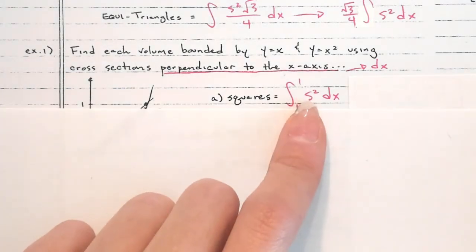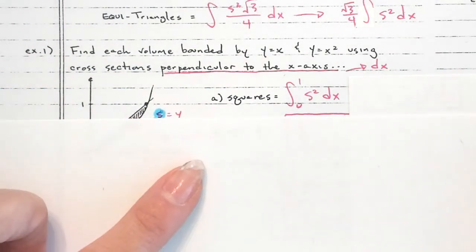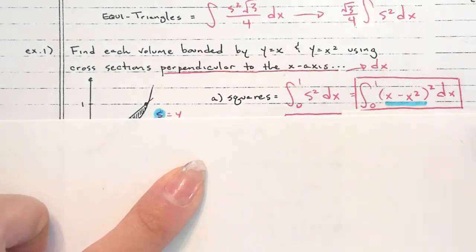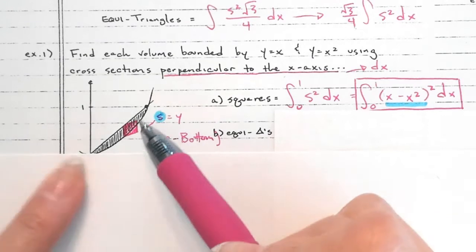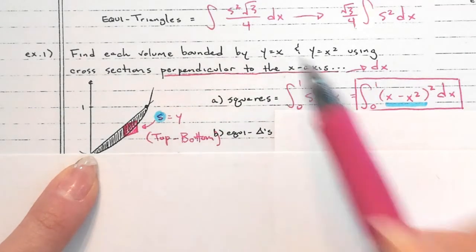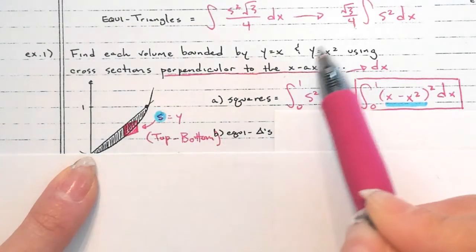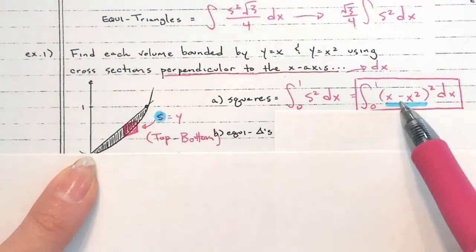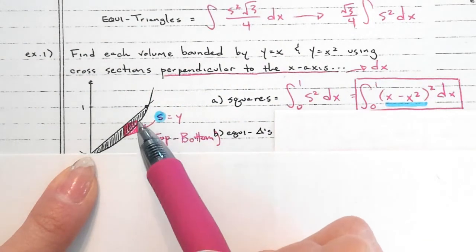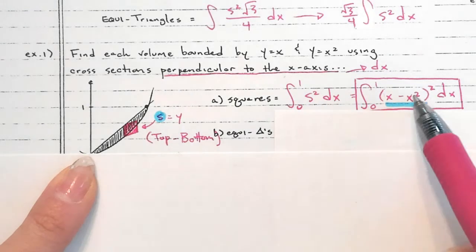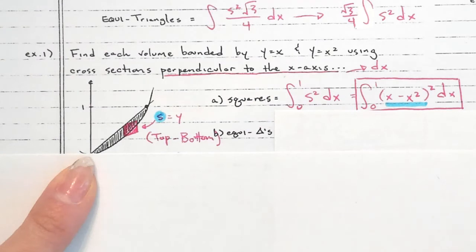I'm going from 0 to 1 based on the picture. The side S is top minus bottom. The top was the line y = x, so x is the top. The bottom is the parabola y = x². So I have x minus x² as my side, and that side gets squared. That's why I highlighted it — S represents the side of the square, and the area of one square is S².